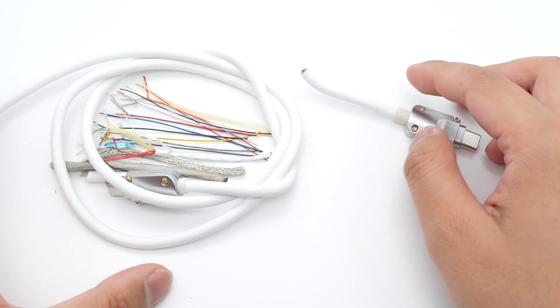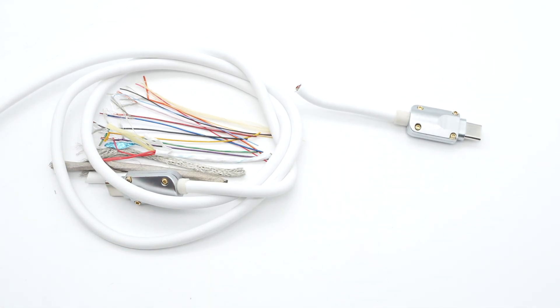The clip-on ferrite magnetic ring in the middle of the cable can greatly enhance its anti-interference performance. You can also consider making a Thunderbolt 4 cable if you want.